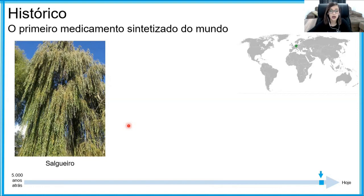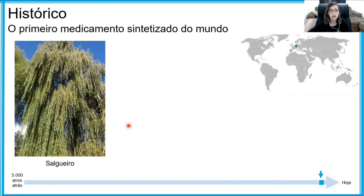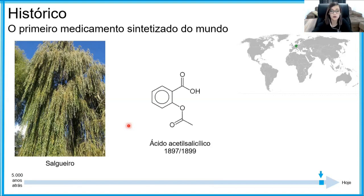Mas esses compostos, apesar de ter as propriedades terapêuticas, eram muito instáveis ou tinham efeitos adversos muito importantes. Por exemplo, o ácido salicílico conseguia baixar a dor e a febre, mas machucava muito a mucosa do estômago. O paciente podia tomar e melhorar na hora, mas conforme passava o tratamento poderia desenvolver uma úlcera e ficar ainda pior do que o quadro inicial. Tentando melhorar a molécula, um pesquisador chamado Hoffman, nos laboratórios da Bayer na Alemanha, desenvolveu o ácido acetilsalicílico.